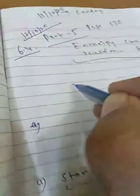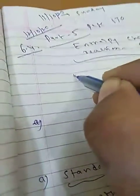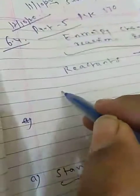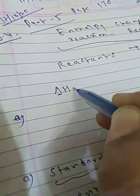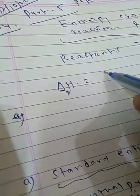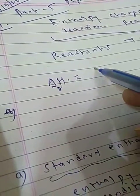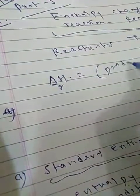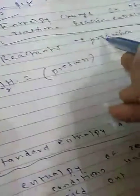I will show you again. Reactants are going to convert into products. We have to show the enthalpy change. Delta H for reaction is sum of enthalpies of products minus reactants.